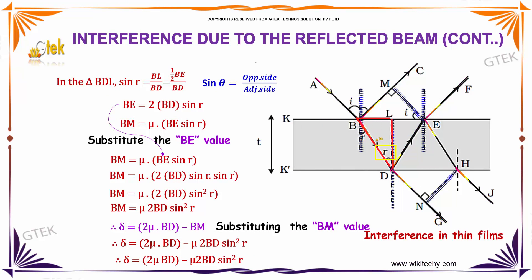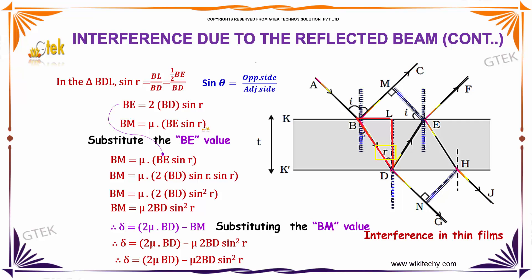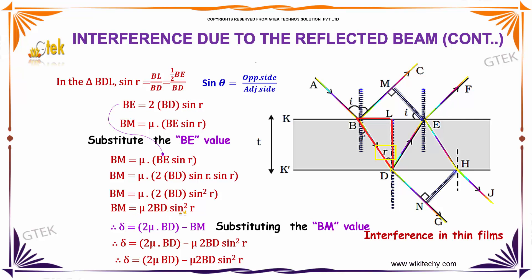Considering triangle BDL, BL divided by BD gives BL as half of BE. So BE equals 2 into BD into sin r. With the refractive index mu, substituting into BM, we get BM equal to mu into BE into sin r, and substituting BE, BM equals mu into 2 into BD into sin r into sin r, that is sin squared r.